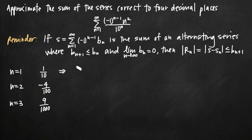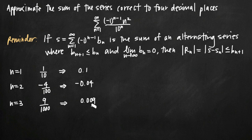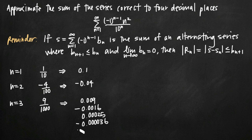The decimal value for 1 tenth is 0.1. The decimal value for negative 4 over 100 is negative 0.04. The decimal value for 9 over 1,000 is 0.009. Continuing to the 4th, 5th, 6th, and 7th terms, we get negative 0.0016 for the 4th term, positive 0.00025 for the 5th term, negative 0.000036 for the 6th term, and positive 0.0000049 for the 7th term.